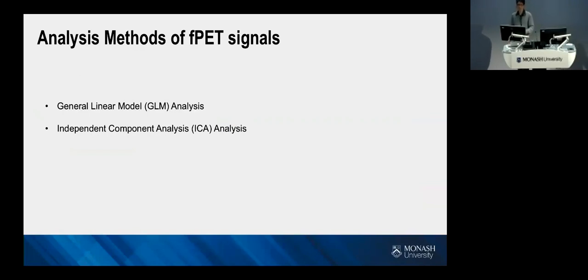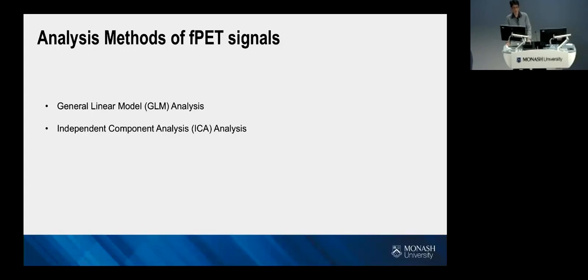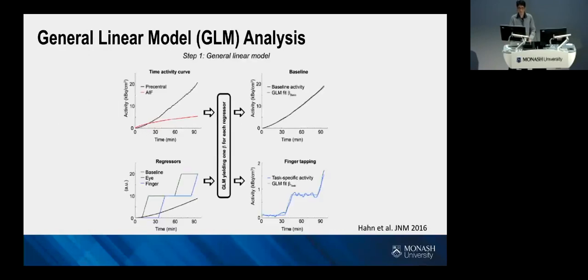Looking at the analysis of fPET signals, there are currently two different kinds of methods. One is a GLM analysis, and several publications have demonstrated it is very effective in task fPET. Another is a data-driven method, for example ICA. In our group, we recently focused on the development of ICA analysis on fPET. Let's first have a look at the GLM methods in existing literature.